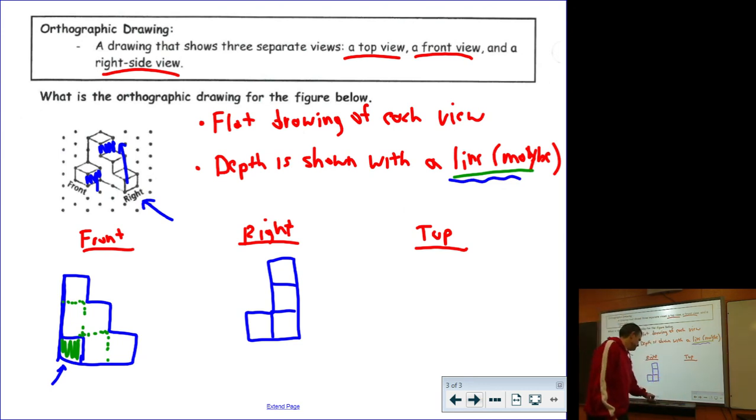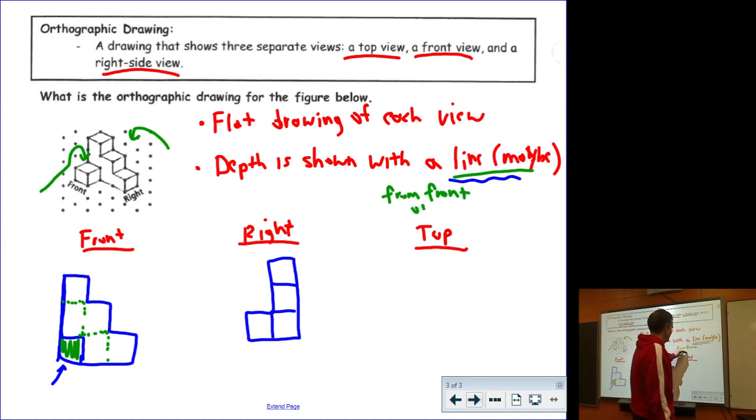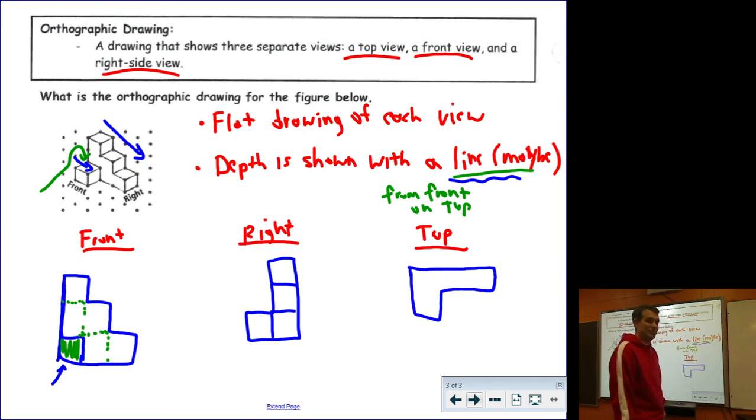Last is the top view. The top view has one additional thing to think about: when you're looking at it from the top, are you looking from this side or this side? I am going to be looking at it from front on top. So it might look like this. It goes three across and then one across. Your lines might look like this. That might be what the top view looks like as a flat drawing. Those are orthographic drawings.